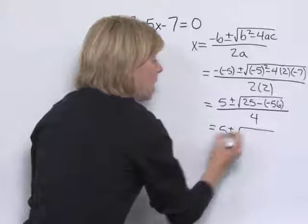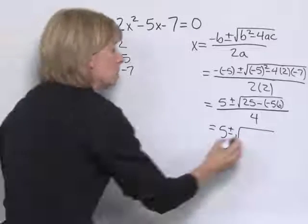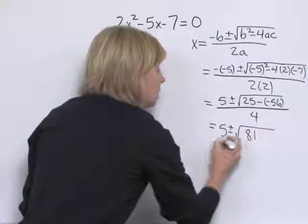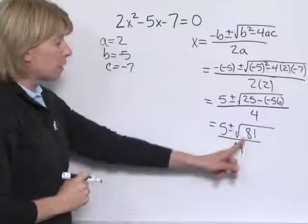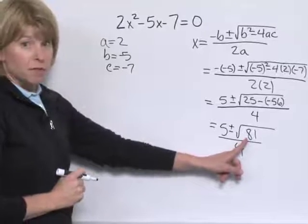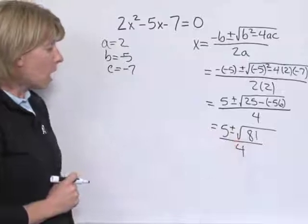Under the radical, we have 25 minus negative 56, which is 81, over 4. And finally, we can simplify the square root of 81 is 9. So we've got 5 plus or minus 9, all over 4.